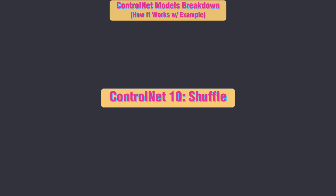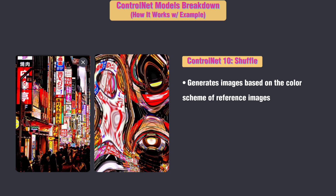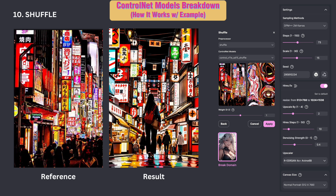ControlNet 10: Shuffle. This is one of the coolest ControlNet models. It helps you generate images based on the color scheme of reference images. You can use it to remix the reference image and apply the resulting color scheme to your generation for a unique and exciting outcome.